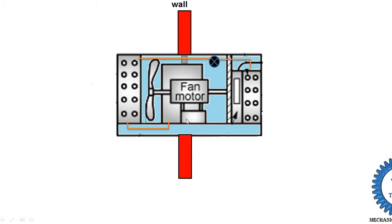The unit is divided into two parts by the wall where it is installed. One is the indoor part and the other is the outdoor part. In the indoor part there is the evaporator, evaporator blower, and expansion device. Outside the wall is the condenser, because the condenser rejects heat to the atmosphere, while the evaporator absorbs heat from the room space.